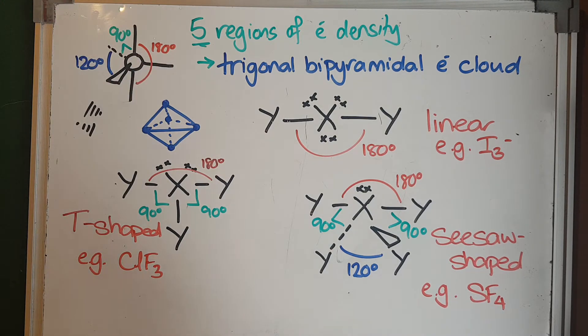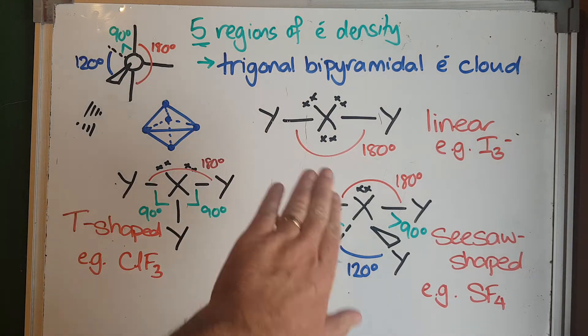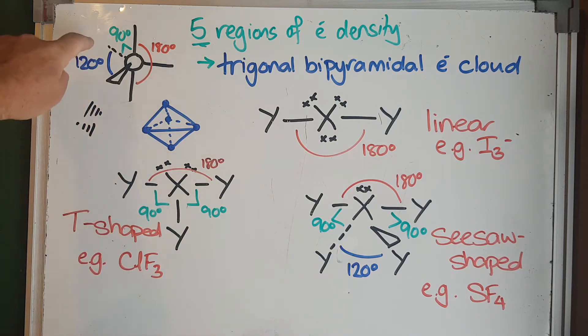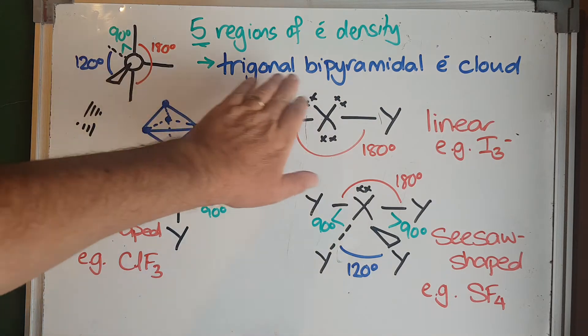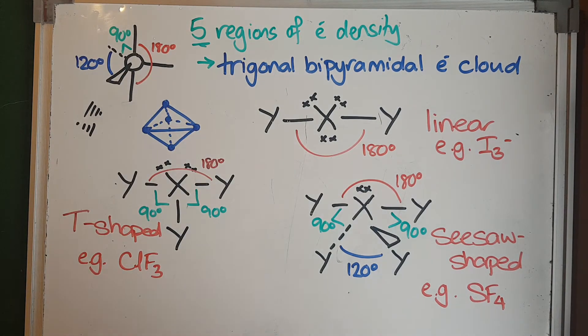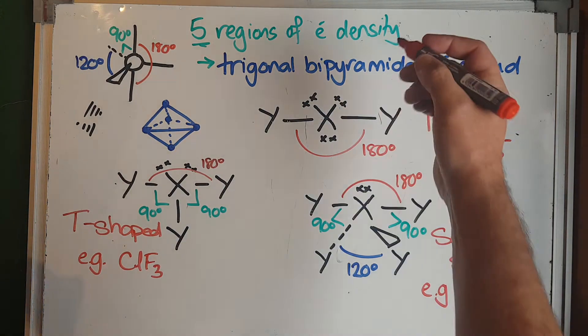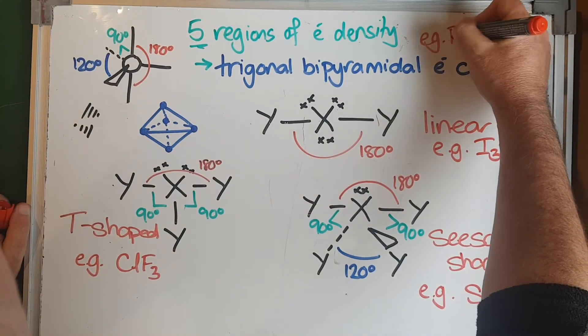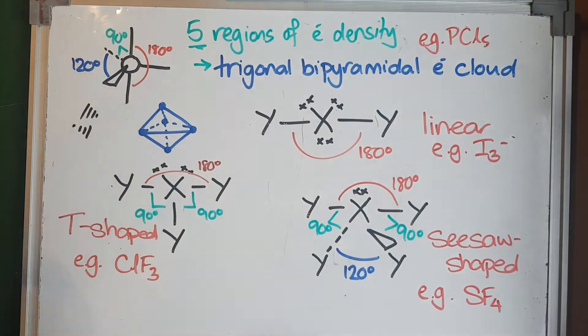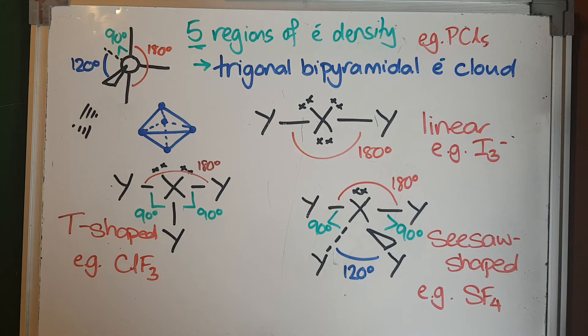So we call it a trigonal bipyramidal electron cloud. If there's something on every one of those, the shape of the structure would be a trigonal bipyramid. A good example would be PCl5—that would be an example of something that is trigonal bipyramidal.